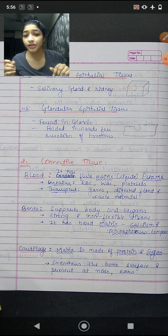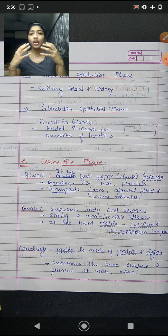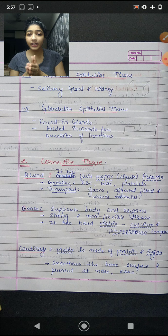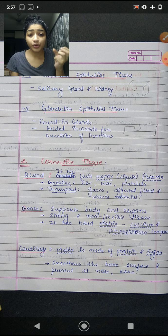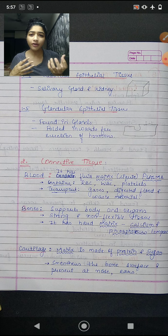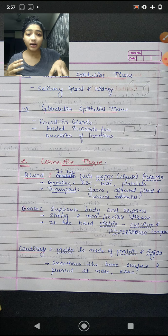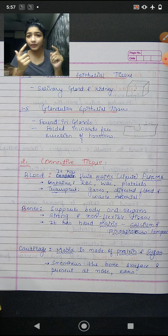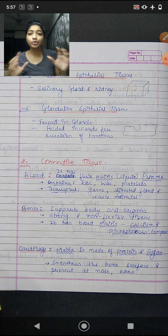Bones support our body and organs. The matrix of bones is made of phosphorus and calcium compounds, making them very strong and non-flexible tissue. Cartilage is also a type of bone tissue but is soft and flexible. The matrix of cartilage contains proteins and sugars. Cartilage is present so that two bones can attach easily to each other.